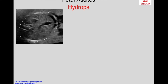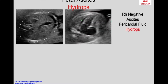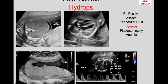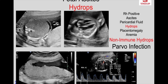Here you see a fetus showing — it is an Rh negative fetus. There is ascites, there is pericardial fluid, so two compartments, so there is hydrops, and there is also placentomegaly, and the MCA Doppler shows anemia. These are features seen in an Rh negative mother. However, MCA Doppler shows anemia but it is Rh positive, so it is not immune hydrops. It is non-immune hydrops due to fetal anemia from parvo infection — one example of non-immune hydrops.